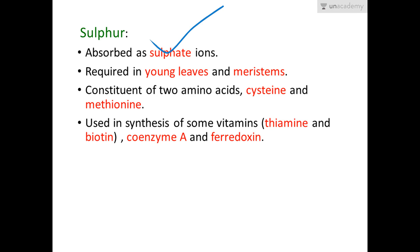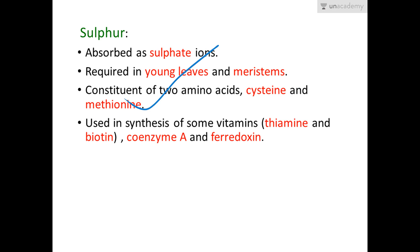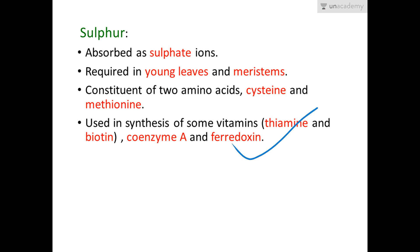Sulfur is absorbed as SO₄²⁻ (sulfate ions) and is required in young leaves and meristems. It is a constituent of two amino acids — cysteine and methionine. Sulfur is used in the synthesis of vitamins like thiamine and biotin, as well as coenzyme A and ferredoxin. Ferredoxin is an electron carrier compound. This covers all the macronutrients; micronutrients will be discussed in the next lesson.